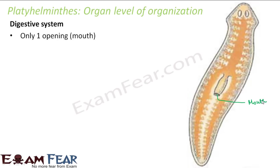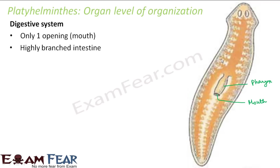They have a highly branched intestine. Once food enters through the mouth, it goes through the pharynx. From the pharynx, it connects to the intestine, which is highly branched with a lot of branches involved within it.